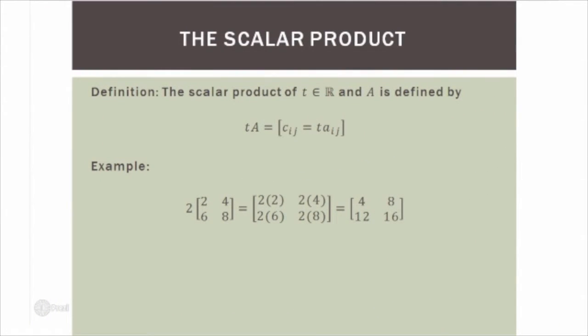Now the scalar product: the scalar product of a real number T and a matrix A is defined by distributing T to all entries. So the scalar 2 times the matrix with entries 2, 4, 6, 8 — the 2 gets distributed to all entries — and the output would be 4, 8, 12, 16.